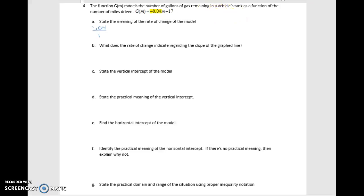If we look at this, M is our input. So this relates to the change in M over the change in G. And so for every mile driven, the number of gallons in the tank, and since it's negative, decreases by 0.04.